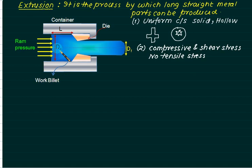What exactly here is that we have a billet here. This one is called the work billet. This one is a container. This one is a die. The initial diameter of billet is D0 and we have a ram here. We apply the force, and this force is distributed over the pressure equal to P.